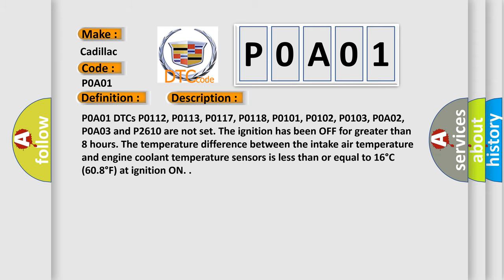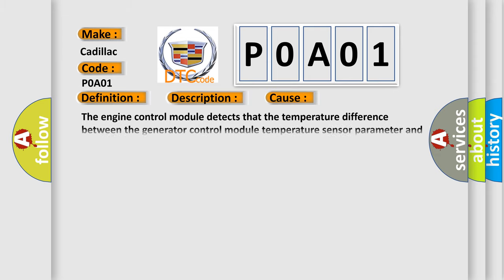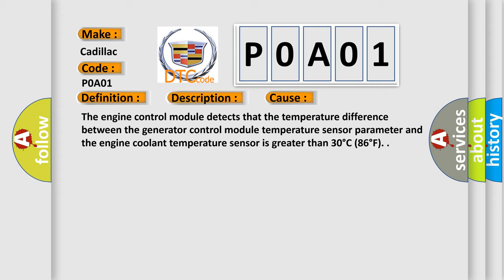This diagnostic error occurs most often in these cases. The engine control module detects that the temperature difference between the generator control module temperature sensor parameter and the engine coolant temperature sensor is greater than 30 degrees C (86 degrees F).